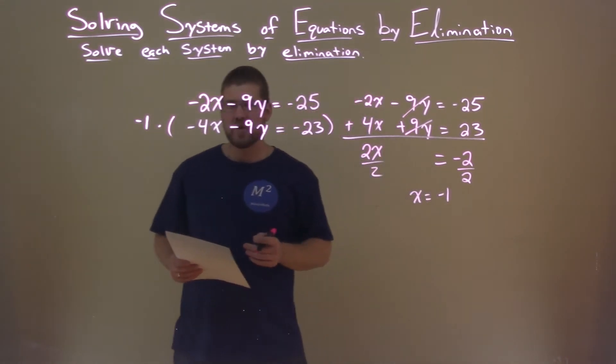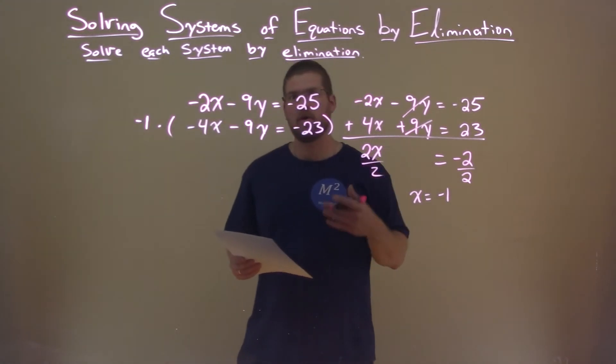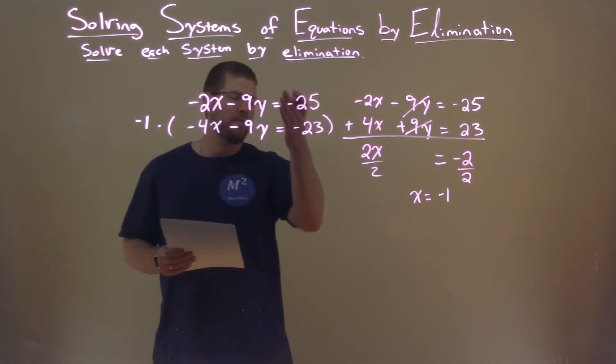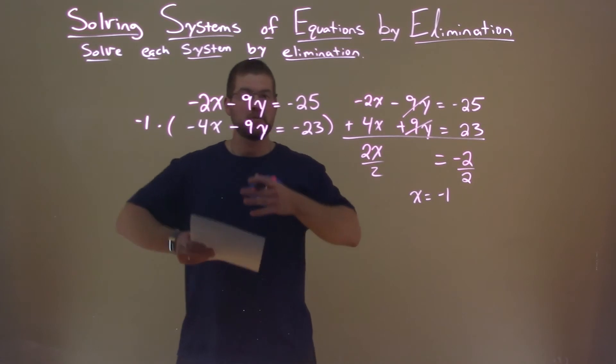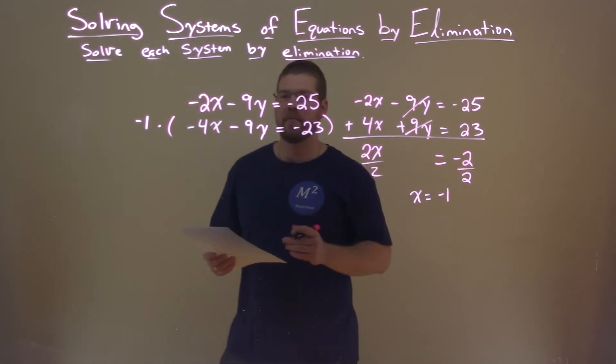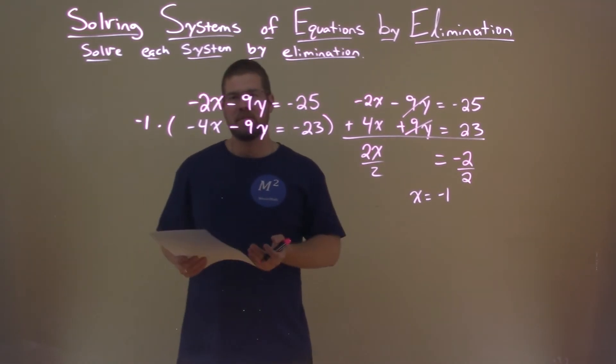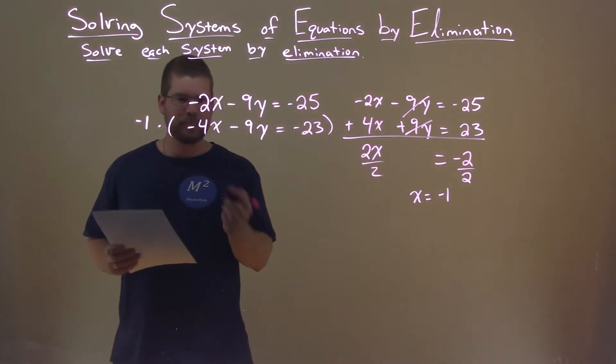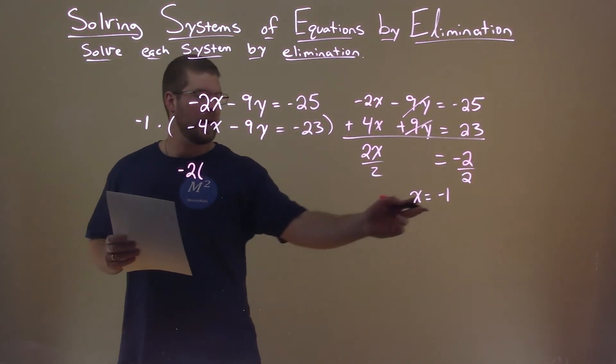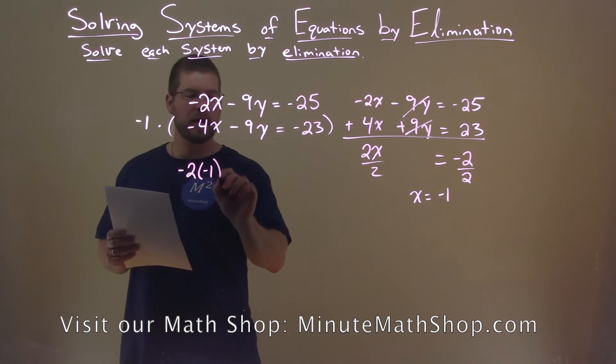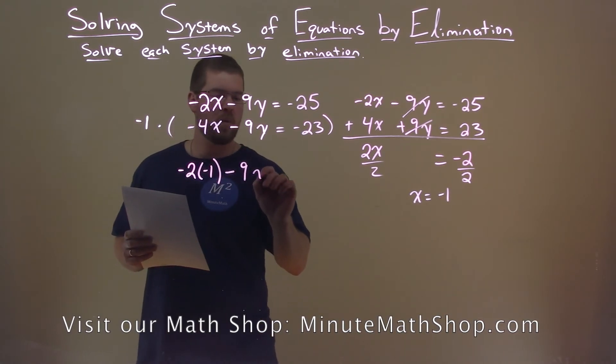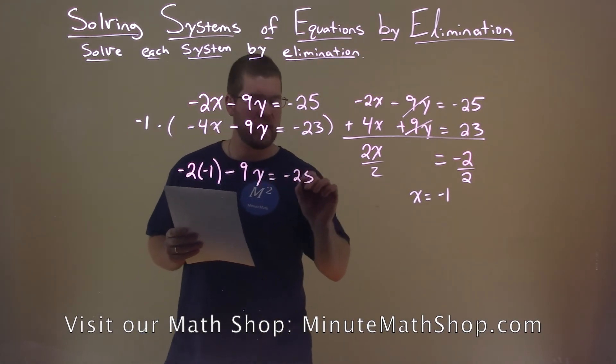So with that information here, we need to move on and solve for y. I pick one of my equations here to use, to plug negative 1 in for x, and I try to find the easier of the two. This one's kind of hard, let's just pick the first one. Negative 2 here, and I plug negative 1 in for x, and we minus 9y equals negative 25.